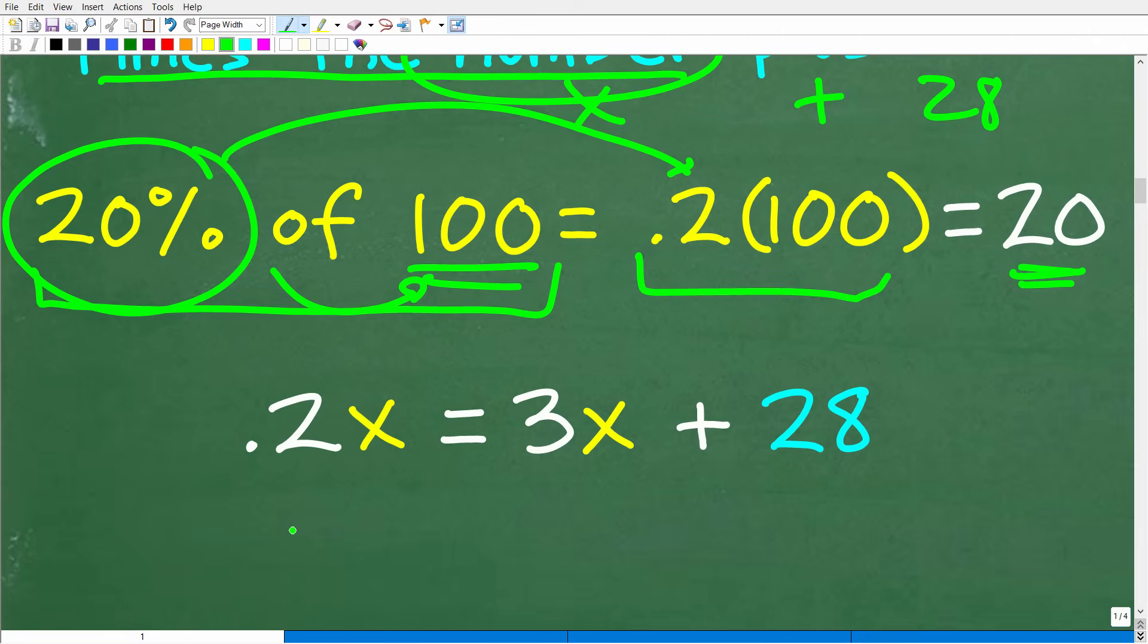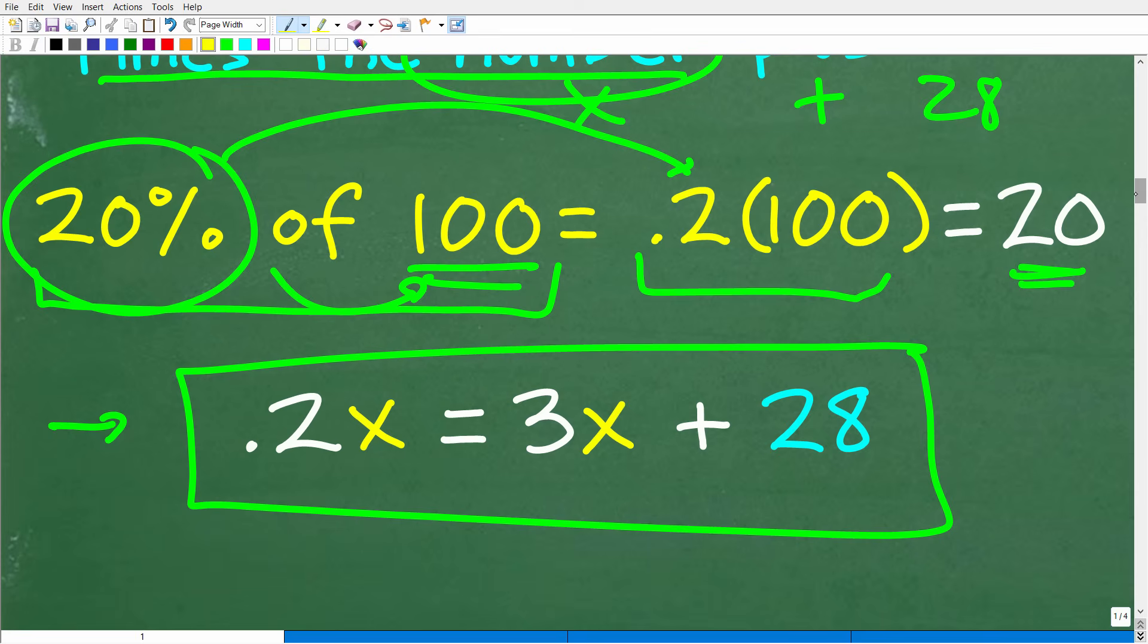So 20% of our number is going to be 0.2 times that number, which of course we don't know, it's X. So this is 20% of the number is equal to three times that number plus 28. So this is what we have here. We have this lovely linear equation, 0.2X is equal to 3X plus 28. Now we can put our attention on solving this equation for X.